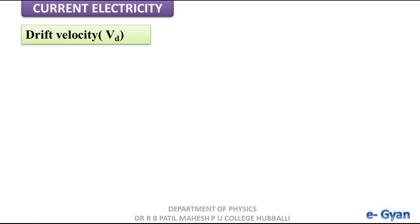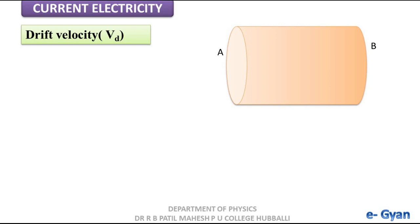Let us try to understand what is drift velocity. Consider a conductor. In a conductor there are a large number of free electrons, and these free electrons at room temperature will gain thermal energy. Due to this thermal energy, these electrons will move in random directions with very high velocity, and that velocity is called thermal velocity. The average thermal velocity of all the electrons at room temperature is zero due to their random motion, therefore there is no net flow of electrons.